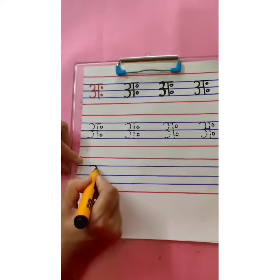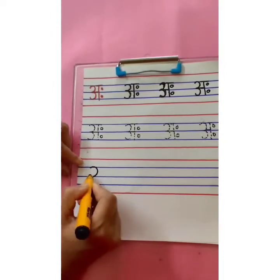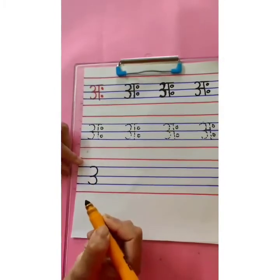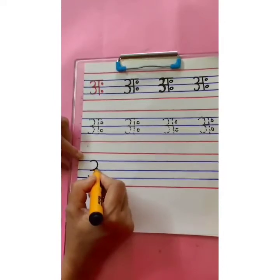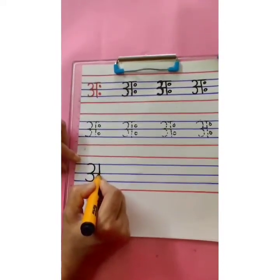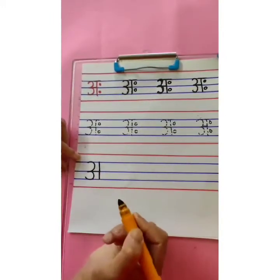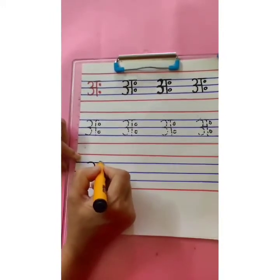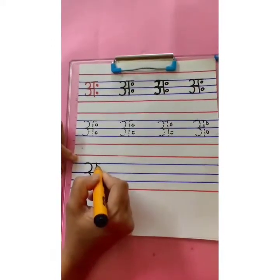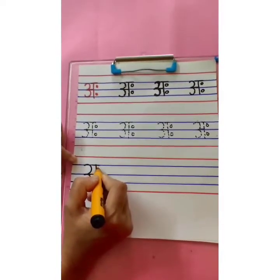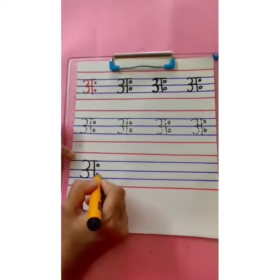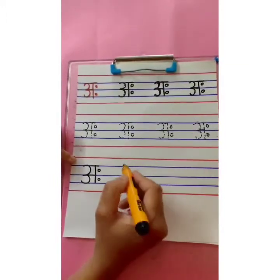Start with the first blue line, write number 3, touch the third blue line. Then a small sleeping line on the second blue line. Standing line from the first blue line to the third blue line, which will touch the sleeping line on the second blue line. Over a small sleeping line. And two dots beside the standing line — one between the first and second blue line, another between the second and third blue line. Aha.